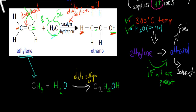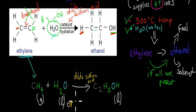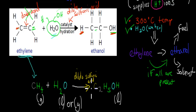Ethylene is usually a gas, and water is usually liquid — though at 300 degrees Celsius it can also be gaseous, since high temperatures cause water to go from liquid to gas state. So you can write H₂O as either liquid or gas, and both are correct. In the presence of dilute sulfuric acid (written above the arrow as the catalyst), ethylene plus water gives ethanol, which is liquid.